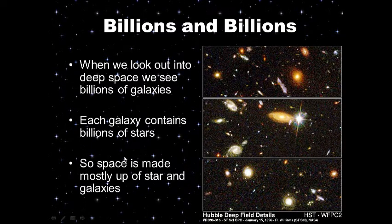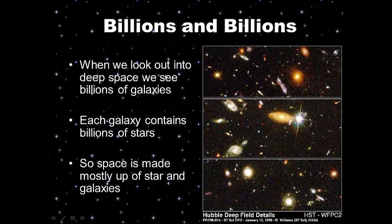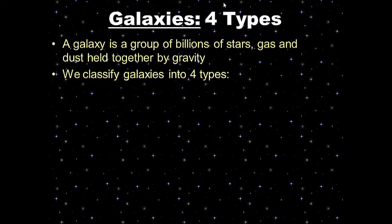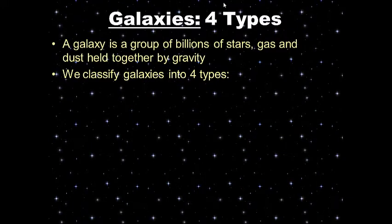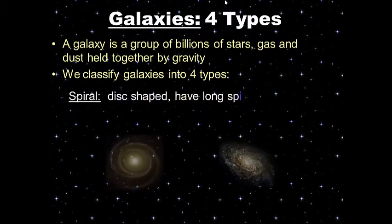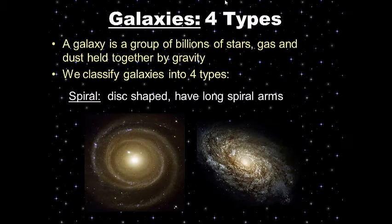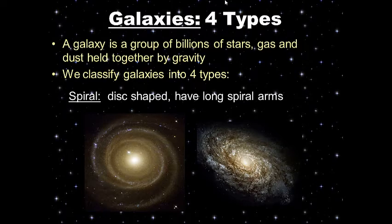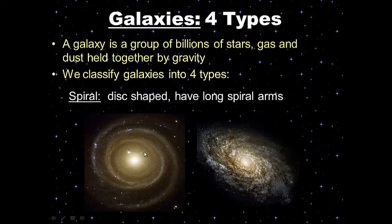Space is made up mostly of stars and galaxies. There are four types of galaxies. A galaxy is a group of billions of stars, gas, and dust held together by gravity. We classify galaxies into four types. First, spiral — these are disc-shaped galaxies, like a frisbee or a CD. They're flat and they have these spiral arms.